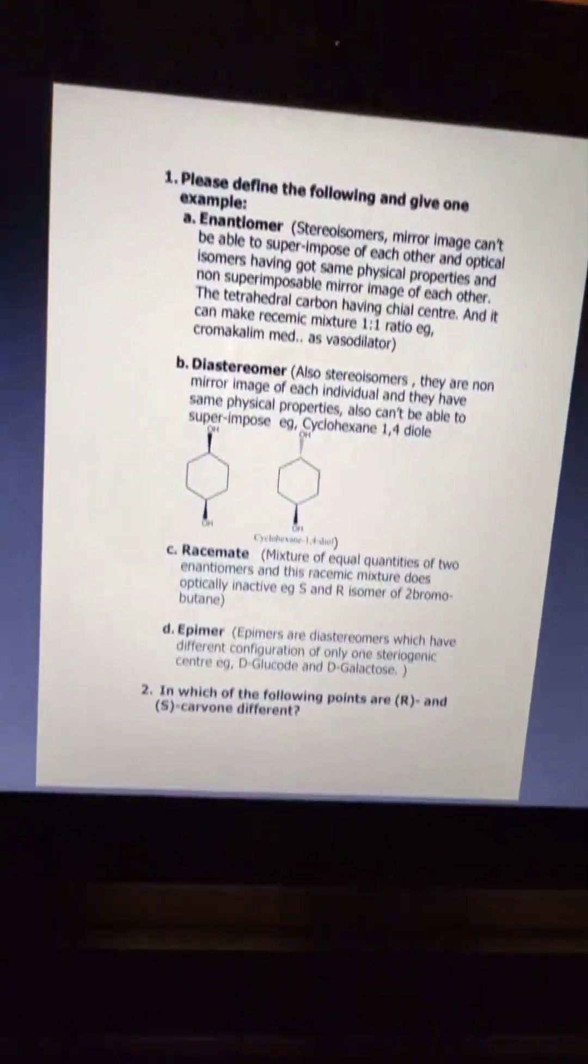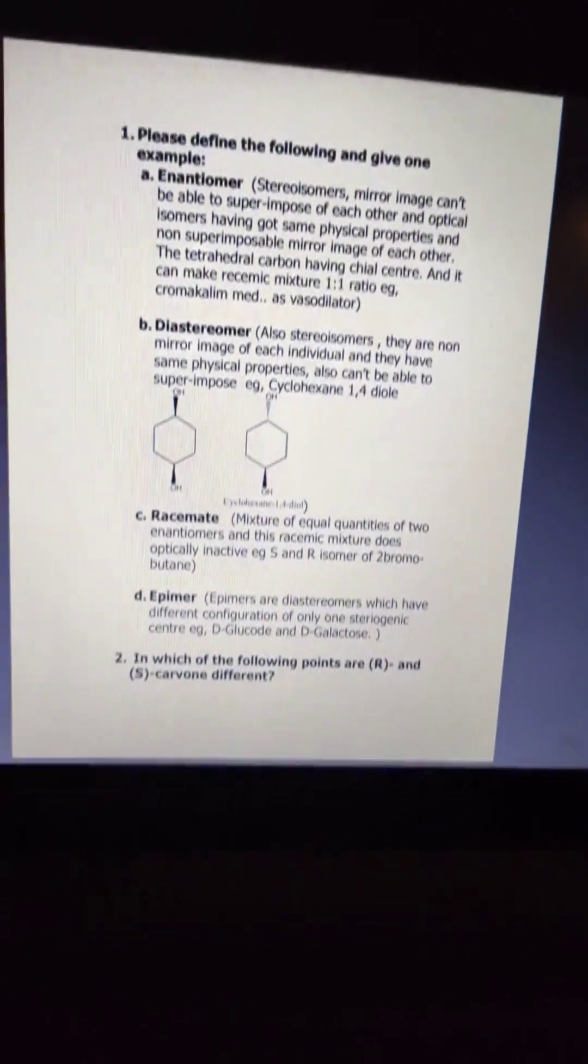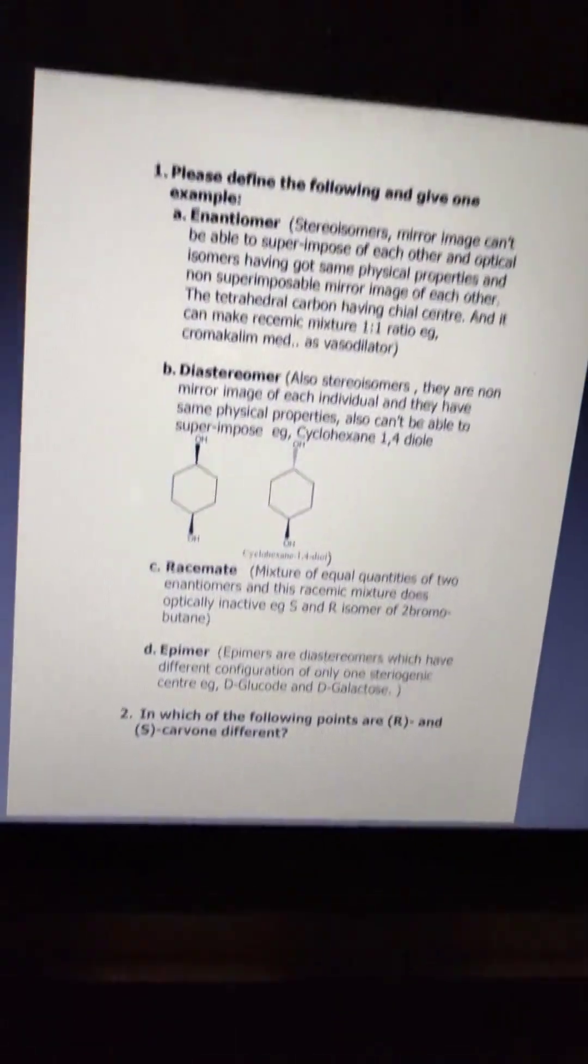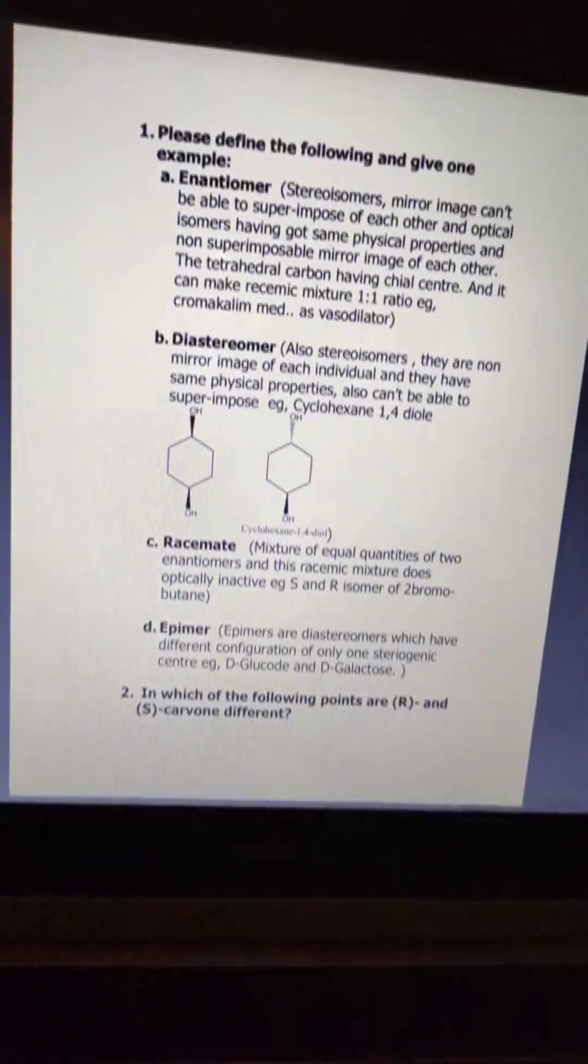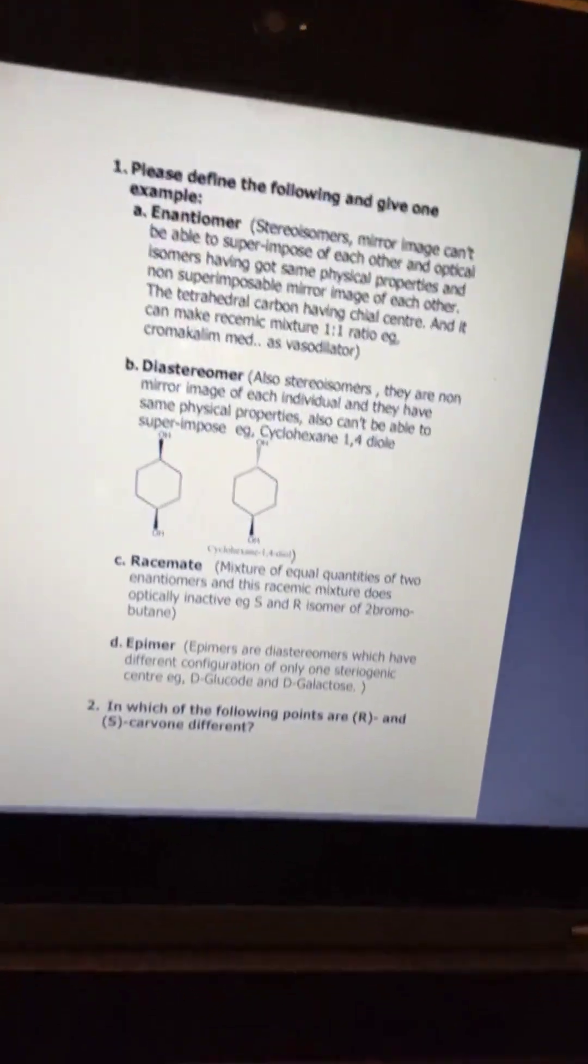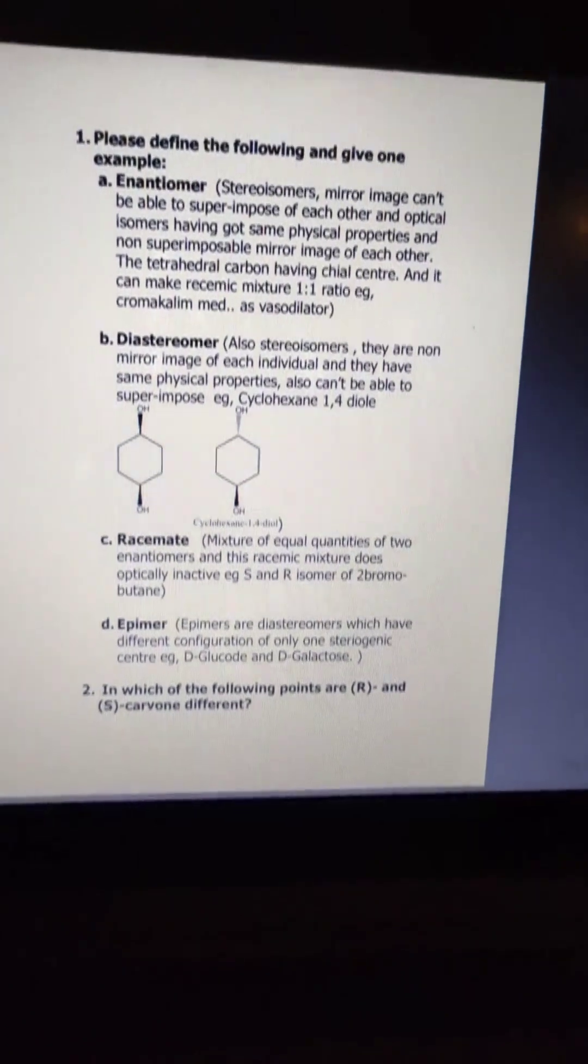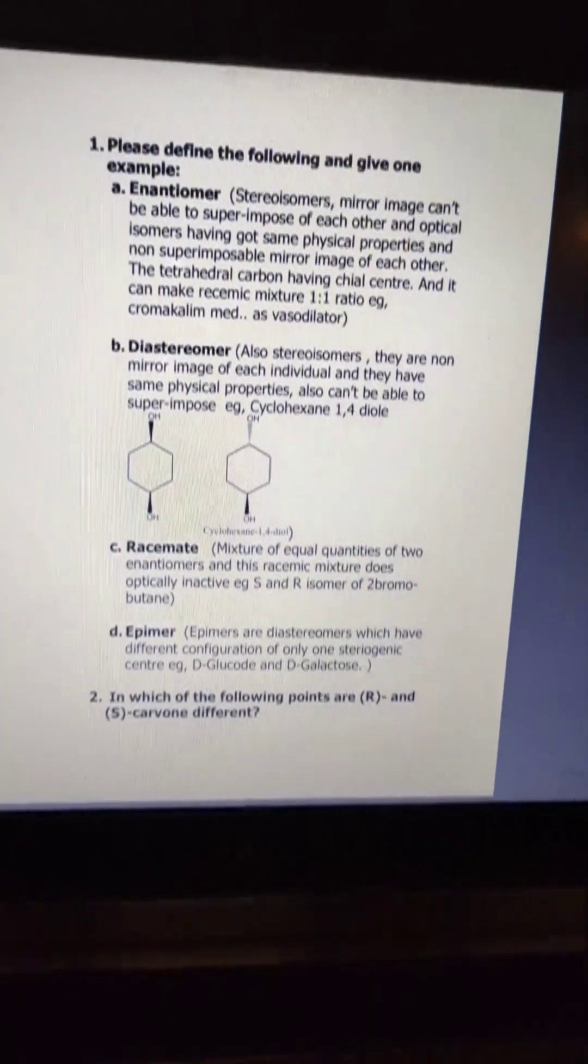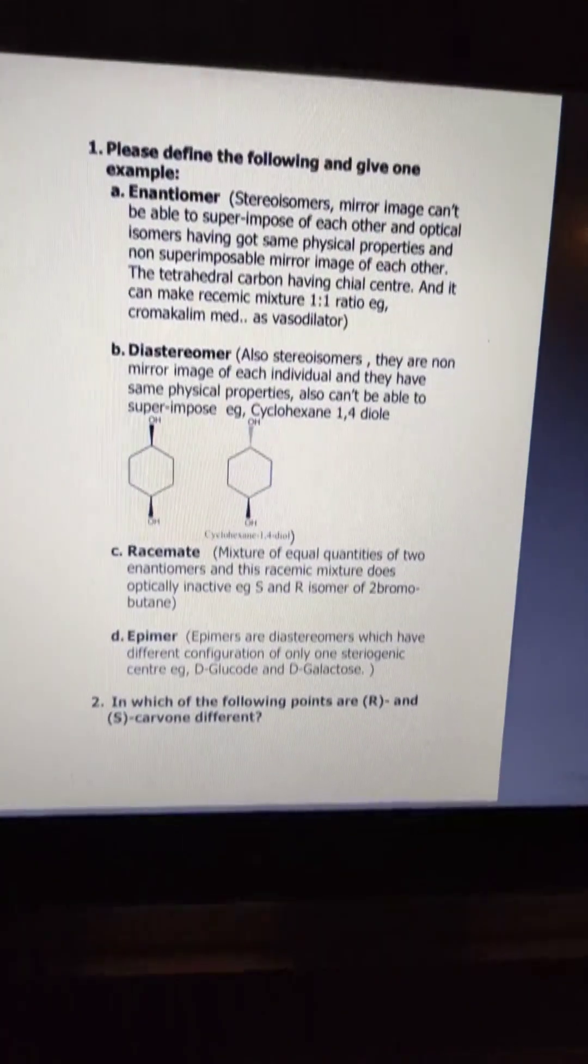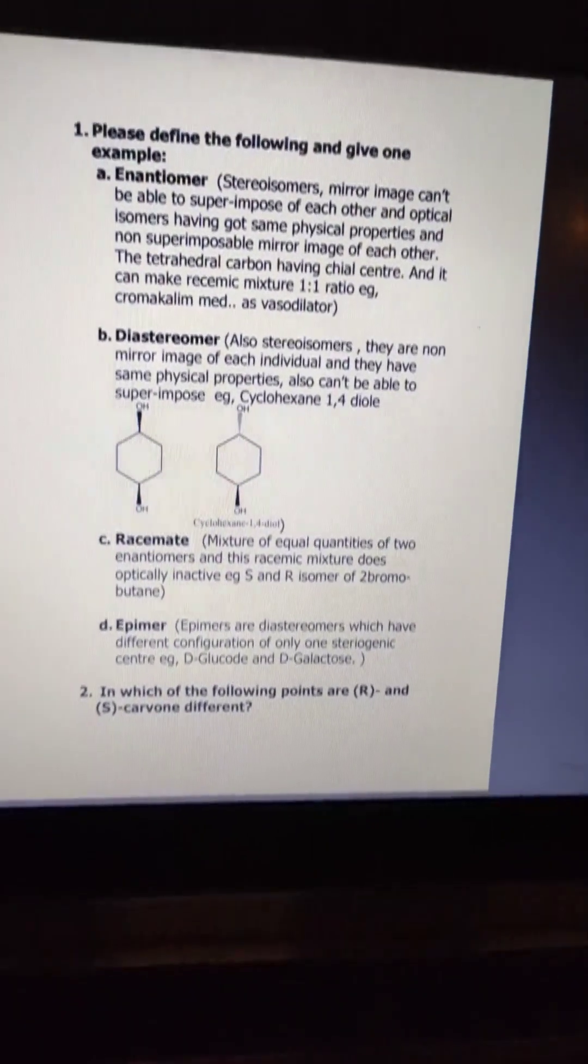What is the similarity between them and what are the differences between them? First, we can talk about the similarity. Both are stereoisomers and one of them is the mirror image. Enantiomers are mirror images but they can't be able to superimpose on each other.